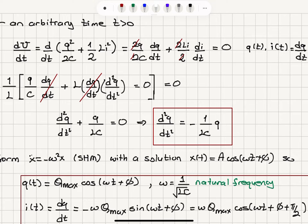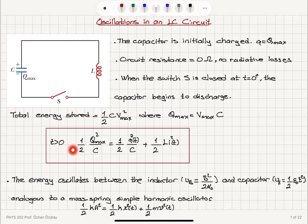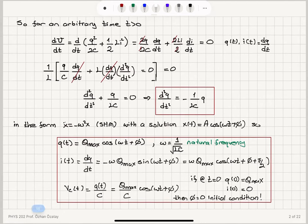For an arbitrary time T, by looking at this energy conservation equation, if we take a derivative with respect to time — since total energy must be constant — the derivative of Q squared over 2C, where charge is time dependent, gives 2Q over 2C times dQ/dt, first taking the derivative with respect to Q and then charge with respect to time. For the term one-half L·i squared, taking the derivative with respect to current gives 2Li over 2 times di/dt. This must equal zero because total energy is constant.